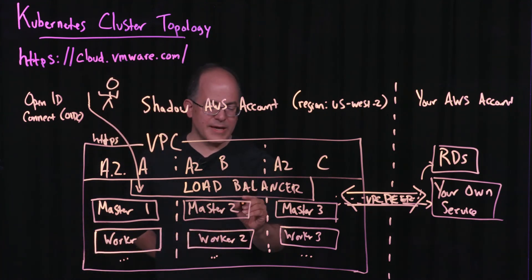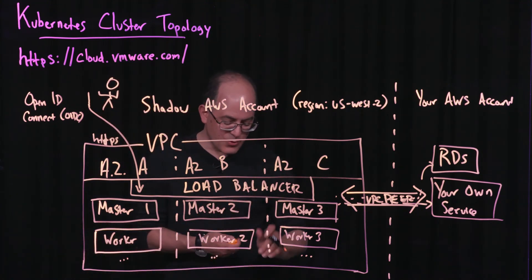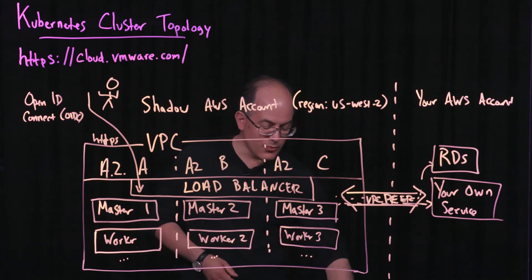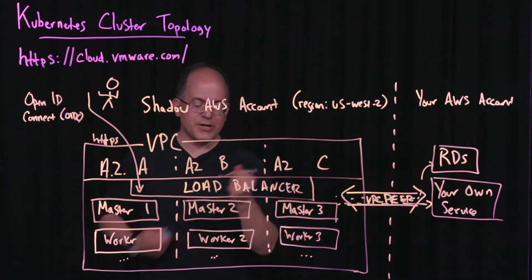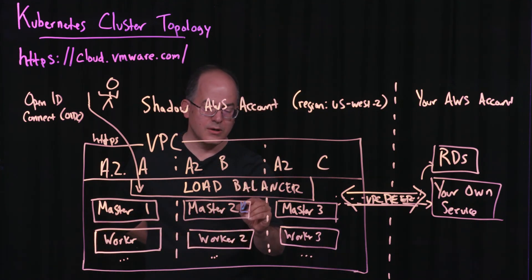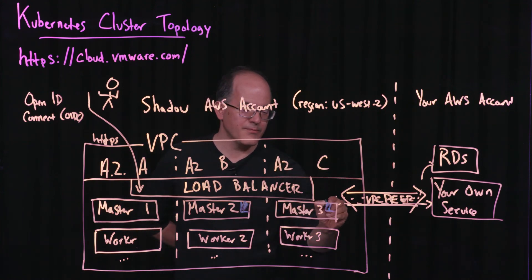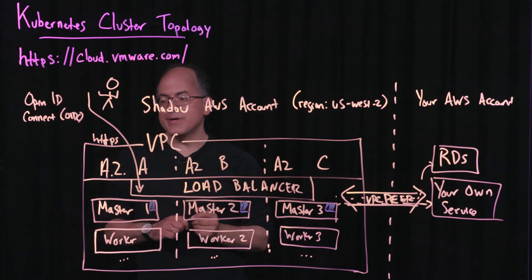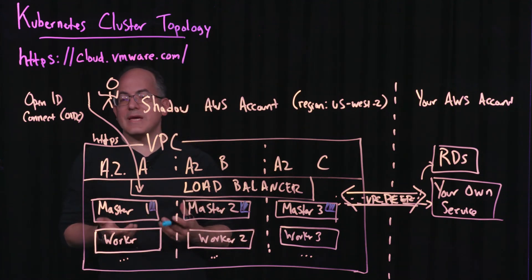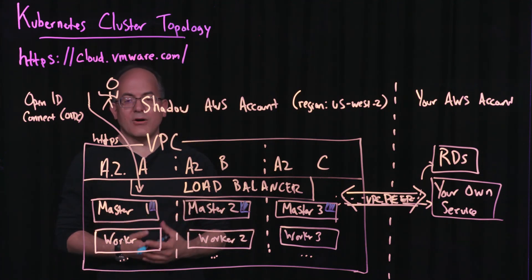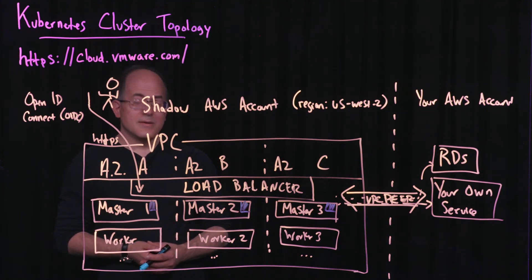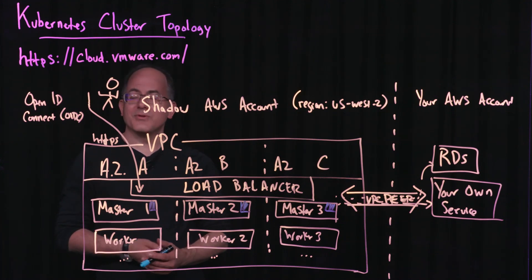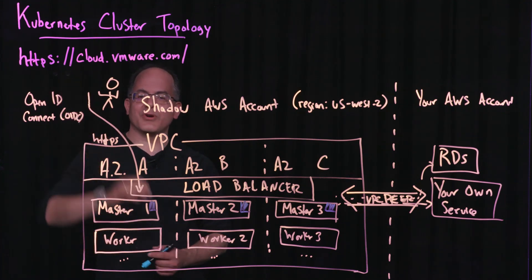Within a cluster, we are running a few extra agents on the Kubernetes cluster. These provide a little bit of extra functionality to support our VKE smart clusters, which allow auto-scaling and automatic recovery of failed nodes. And that's what the topology of our Kubernetes clusters looks like. Thank you. You can learn more at our website, cloud.vmware.com.